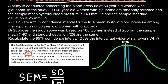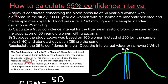Now let's return to our problem and solve it. A study is conducted concerning the blood pressure of 60-year-old women with glaucoma. In the study, 200 60-year-old women with glaucoma are randomly selected, and the sample mean systolic blood pressure is 140 millimeters of mercury, and the sample standard deviation is 25 millimeters of mercury. We have to calculate a 95% confidence interval for the true mean systolic blood pressure among the population of 60-year-old women with glaucoma.